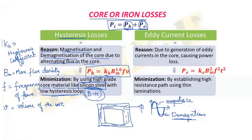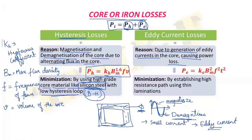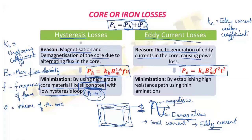The reason for eddy current losses is the generation of eddy currents in the core, which causes power loss. The alternating flux flowing in the core of the transformer sets up a small amount of alternating current called eddy current, and because of this eddy current there will be power loss in the core. The equation for eddy current loss is: Pe = Ke × Bm² × F² × T², where Ke is the eddy current coefficient, Bm is the maximum flux density, F is the frequency of flux reversal, and T is the thickness of laminations used to make the core.